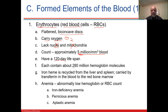There are 280 million hemoglobin molecules in one red blood cell. With five million red blood cells, that's an enormous amount of oxygen-carrying capacity in the blood.